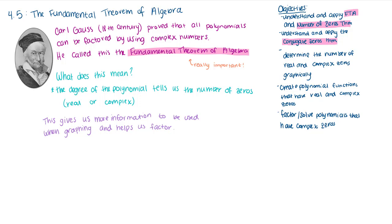The first is understanding the fundamental theorem of algebra, the second is understanding the number of zeros theorem, and the third is being able to understand the conjugate zeros theorem, which is also a very important theorem that many students forget about.